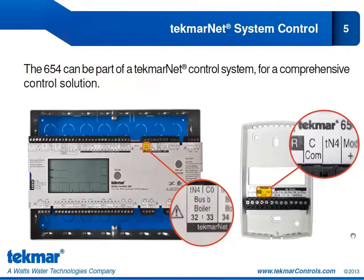Here we have shown the boiler control 284, and we've highlighted the TN4 and C terminals on the 284 and how we could connect the Tecmar Net 654 through those same TN4 and C terminals. It would be two wires from the control to the boiler control 284, and then we would have Tecmar Net communication between the two control points.